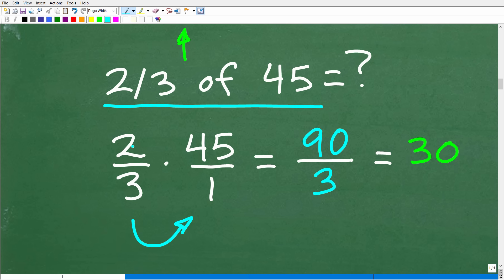Now, we're multiplying a fraction by a number. You can always think of any number as a fraction by just simply putting it over 1. So we're going to take that two-thirds and multiply it by 45 or 45 over 1. And then to multiply fractions, you simply multiply the numerator and the respective numerators and denominators. So 2 times 45 is 90. 3 times 1 is 3. 90 divided by 3 is 30.